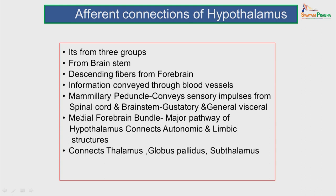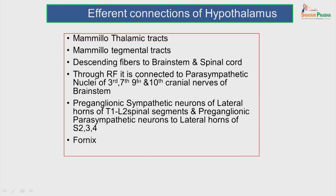The medial forebrain bundle is a major pathway of the hypothalamus which connects the hypothalamus with autonomic and limbic structures. It also has afferent connections to the thalamus, the globus pallidus and the subthalamus. The efferents of the hypothalamus include the mammothalamic tract, which runs from the mammillary body to the thalamic nuclei — the reticular nucleus, centromedian nucleus, ventrolateral or dorsomedial nucleus. The mammillary tegmental tract connects with part of the reticular formation of the midbrain as an efferent connection.